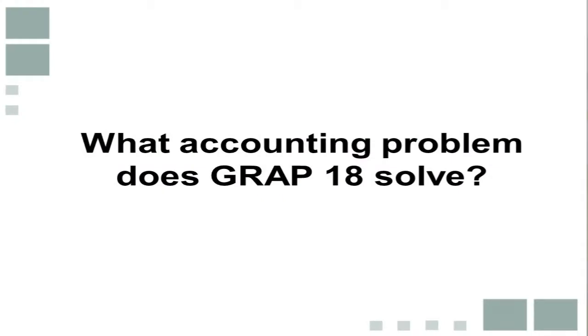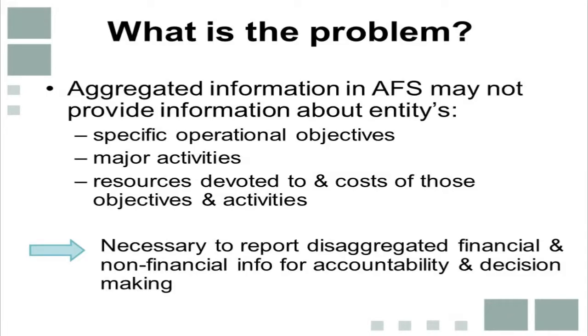The accounting problem that GRAP 18 tries to solve is that information in the financial statements is aggregated and may not provide users with the necessary information about an entity's specific operational objectives, its major activities, and the resources devoted to and costs of those objectives and activities. For that reason, it is necessary to report disaggregated financial and non-financial information so that users can hold entities accountable and make informed decisions.